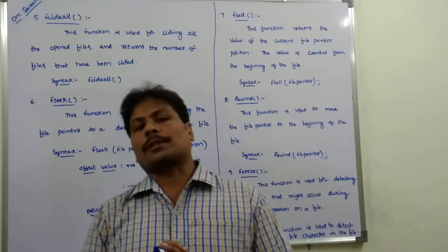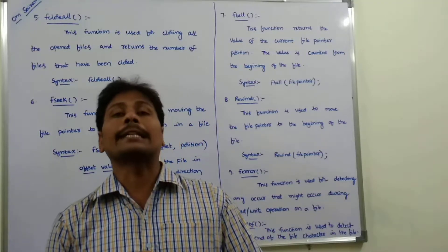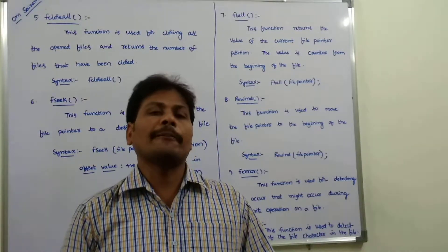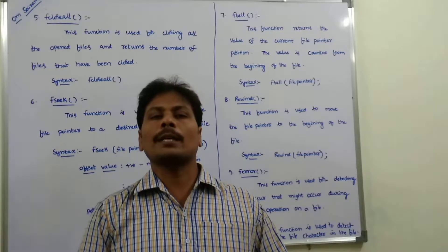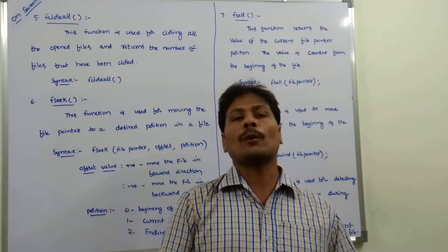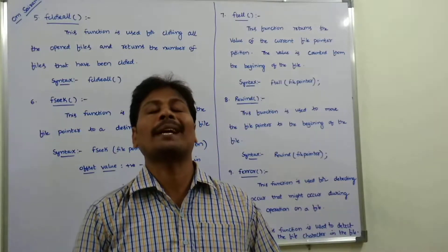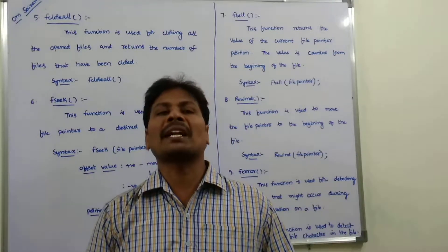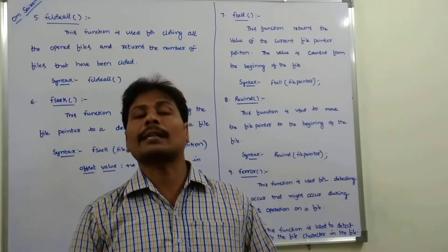Next is the fcloseall function. This function is used for closing all the files at a time that are already open. The difference between fclose and fcloseall: fclose is used for closing only one file at a time, but fcloseall closes all the files that are already open at a time. fclose takes one parameter — the file pointer — while fcloseall does not take any parameters.